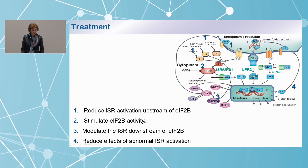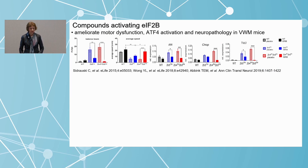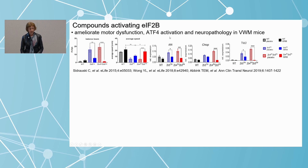We can also stimulate EIF2B activity, or modulate the ISR downstream of EIF2B. There are several compounds that activate EIF2B — these EIF2B activators were found by the group of Sidrauski already in 2015. Multiple modifications have been used, and they all work in the Vanishing White Matter mice: they ameliorate motor dysfunction, decrease ISR activation in the brain, and greatly improve the neuropathology. The slips on the balance beam are highly increased in the mutant mice, and with EIF2B activators they go down. Average speed goes up. ATF4, CHOP, and Tribbles3 all go down.